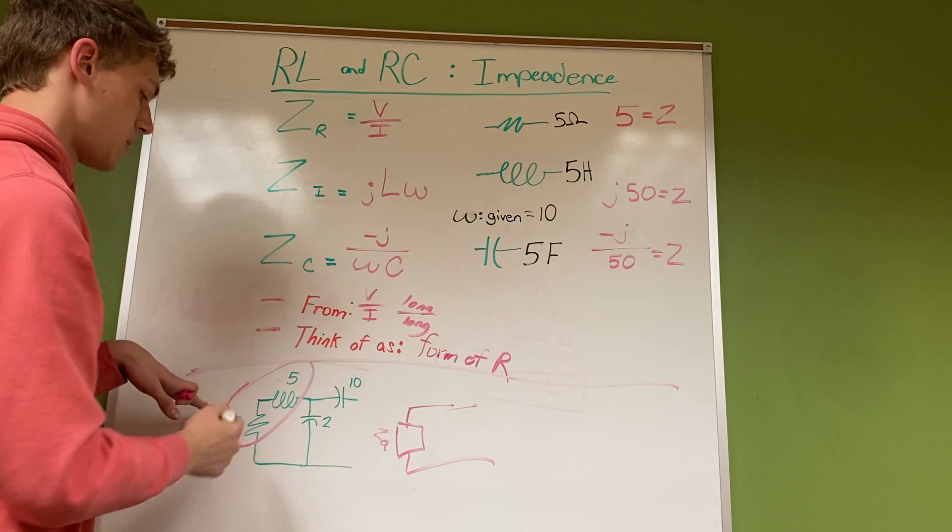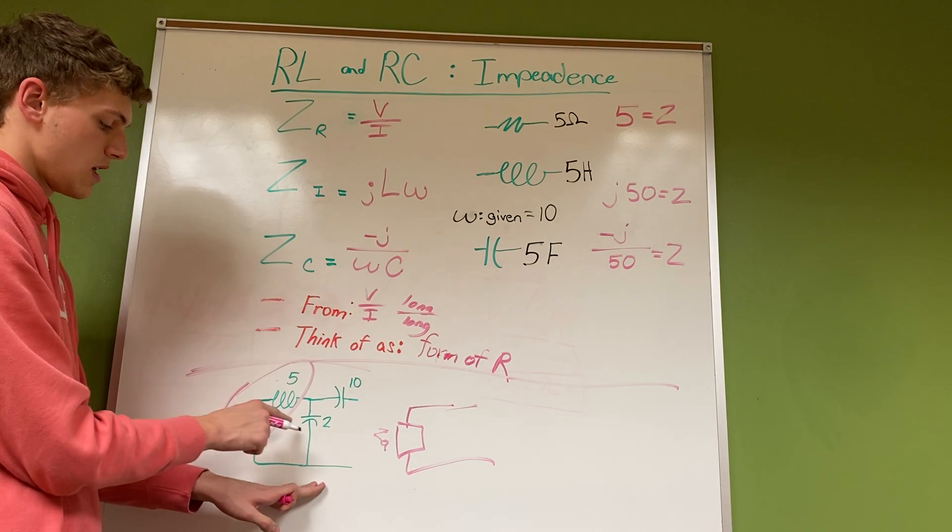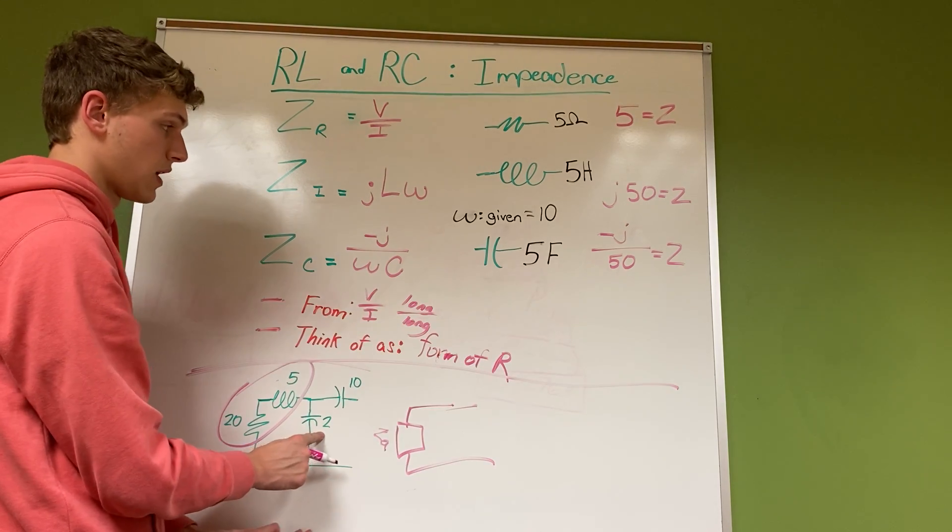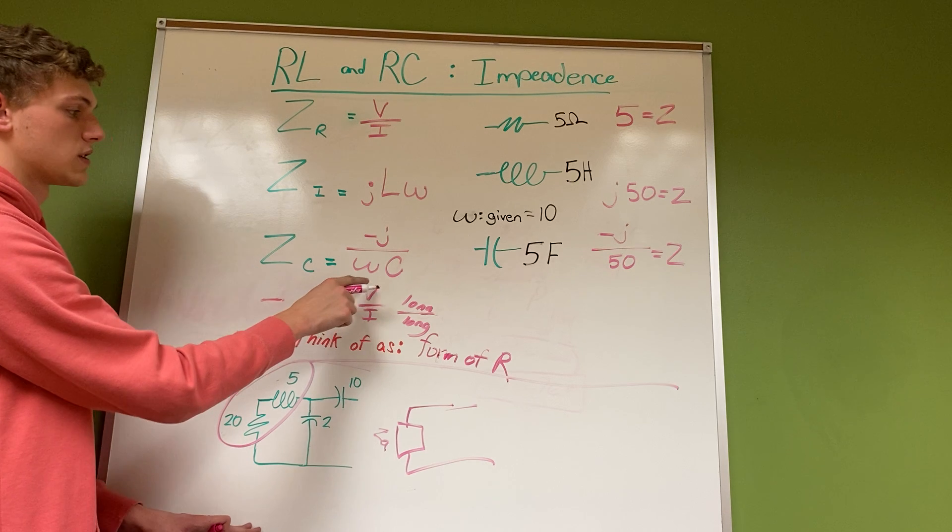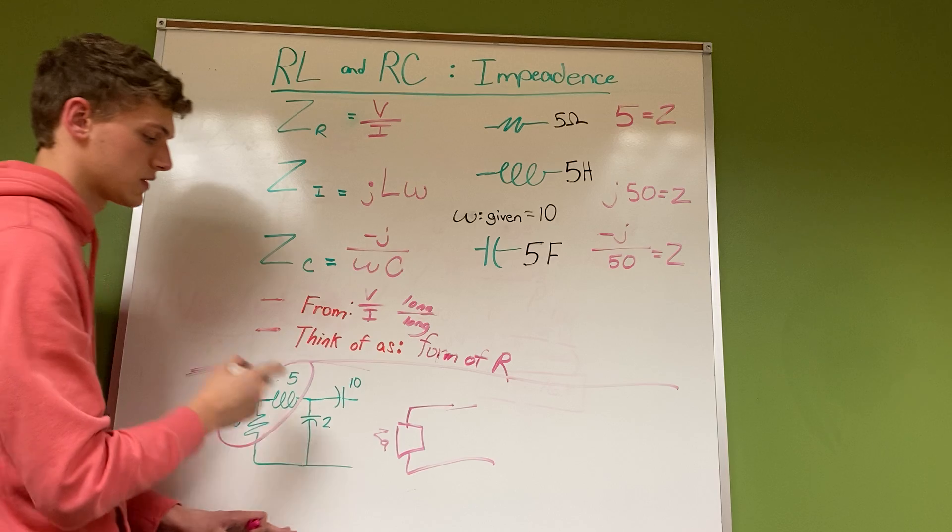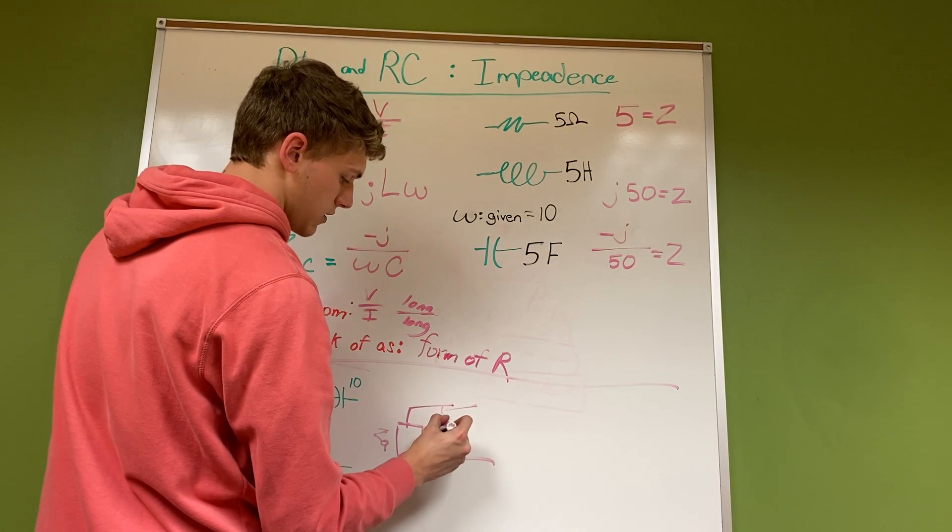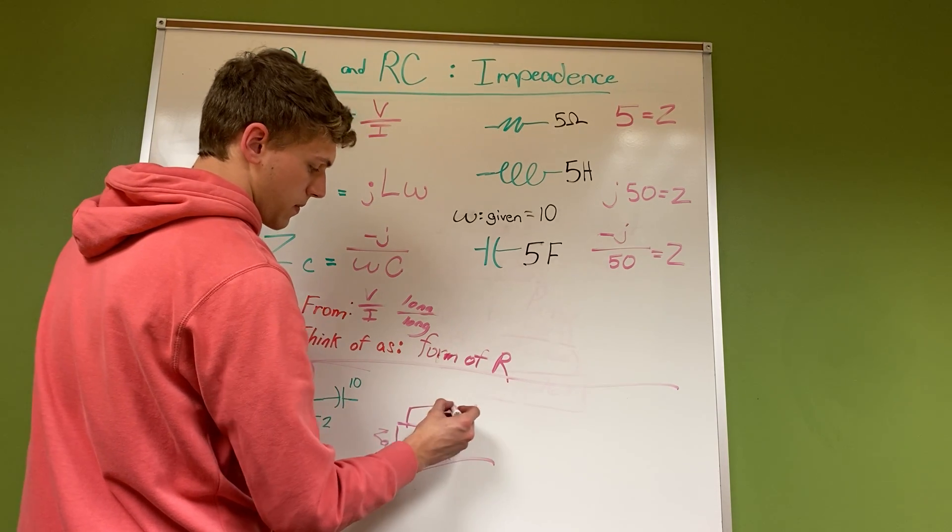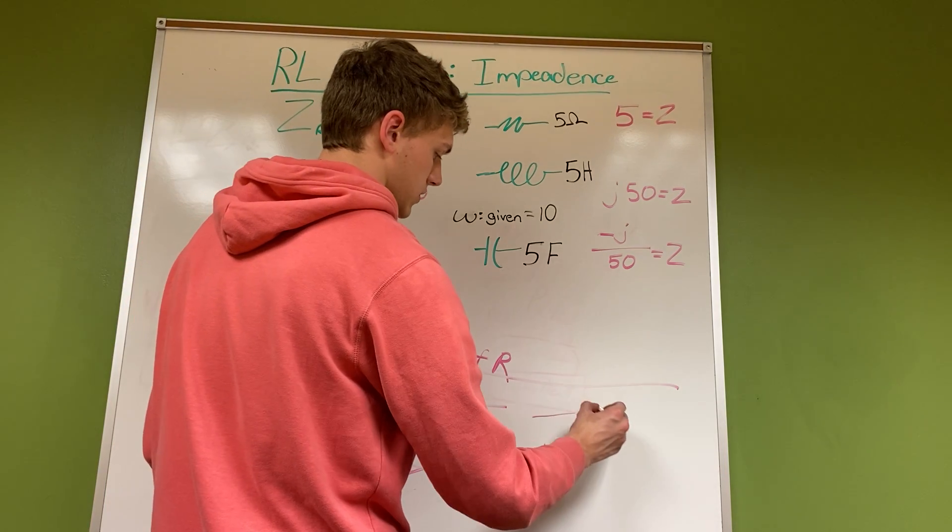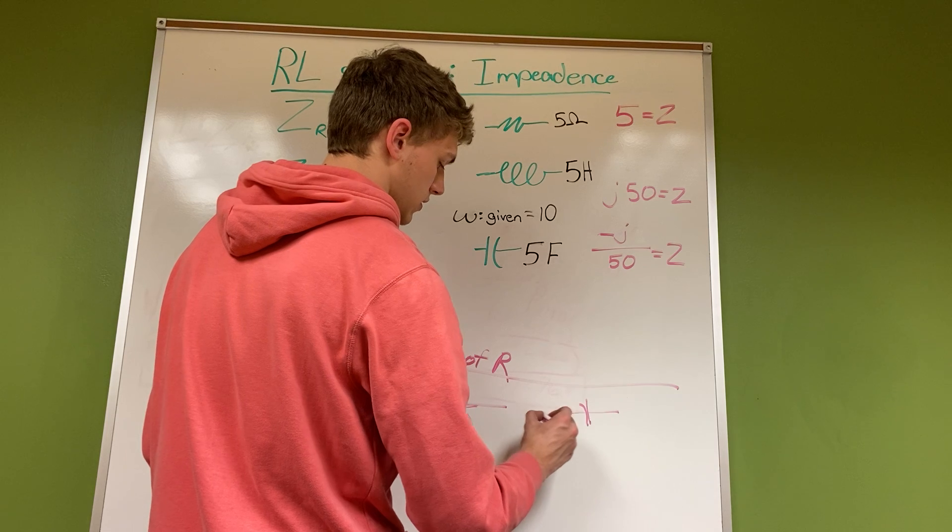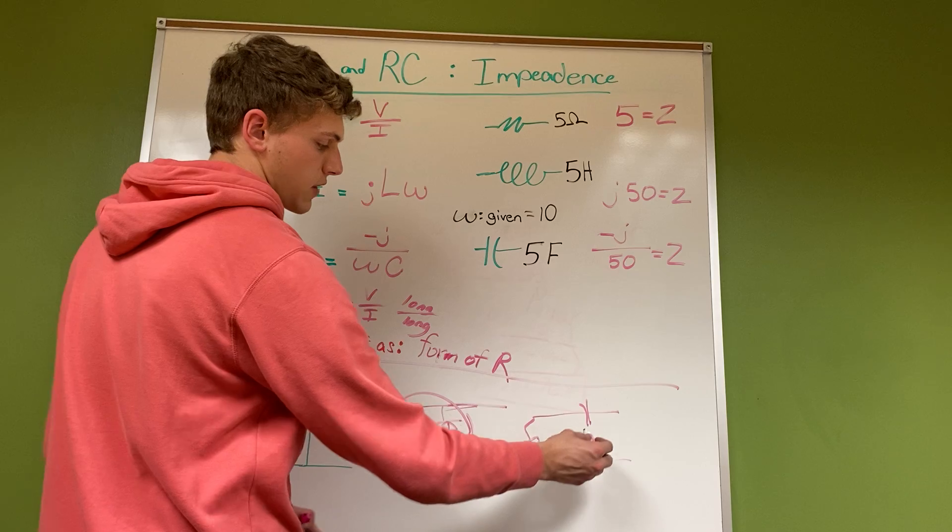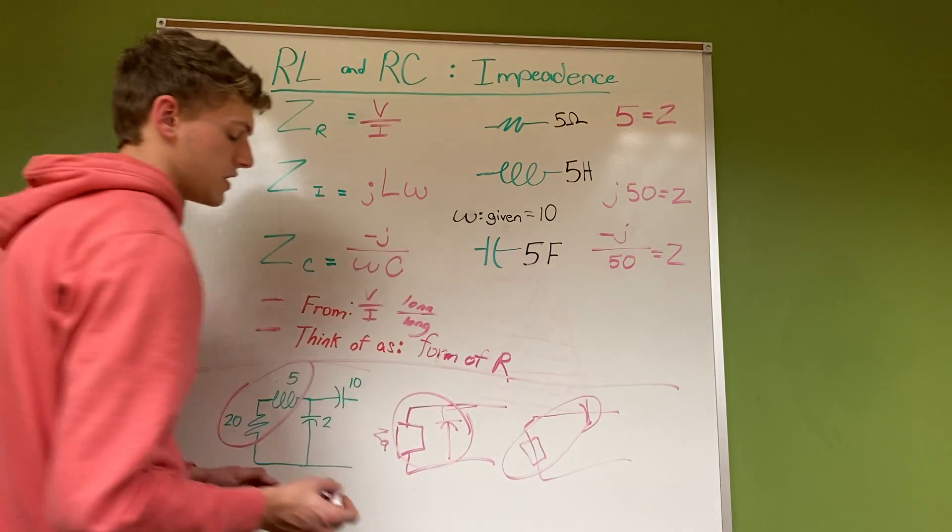Next, we have this box in parallel with this 2 farad capacitor. We'd have to use this equation to change our capacitance of 2 to our impedance. Right here, we change these two together, and then we're left with another capacitor in our box over here. Then we have to combine these two again - they would be in series.